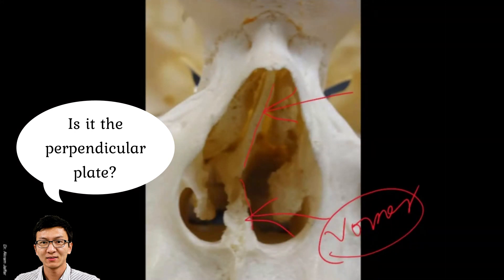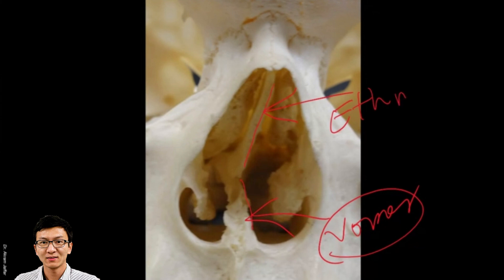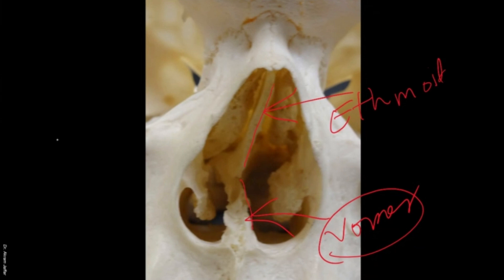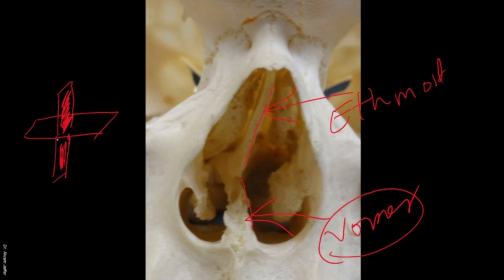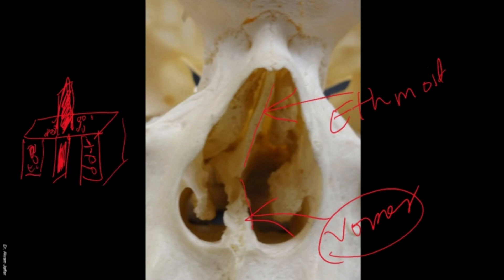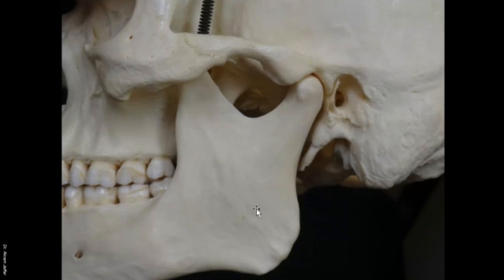That's the perpendicular plate of the ethmoid bone. You can imagine the ethmoid bone like a table, with a partition coming down below the table — that's the perpendicular plate. Above the table is the crista galli, and the table itself is perforated — that's the cribriform plate. Then there are compartments like drawers full of balloons, and these are the air cells — the ethmoid air cells. That's how the ethmoid bone is structured simply.